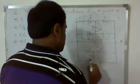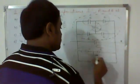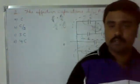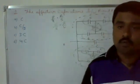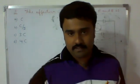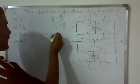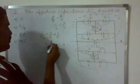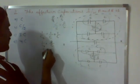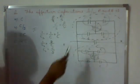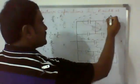So C and C are both connected in series. If two capacitors are connected in series, the formula is 1/Cs = 1/C1 + 1/C2. Here C1 and C2 are both equal to C, so 1/Cs = 1/C + 1/C, that is 2/C, so Cs = C/2. If two identical capacitors C and C are connected in series, the effective capacitance is C/2.